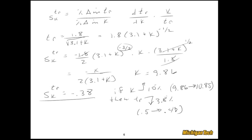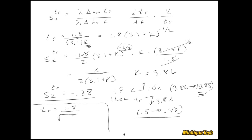We can check this result analytically by putting the boosted value k equals 10.85 back into the formula: 1.8 over the square root of (3.1 plus 10.85) does give us 0.48. Now the more important check is going into MATLAB with the closed loop transfer function at that boosted gain to see if it predicts the same change in rise time from 0.5 to 0.48.